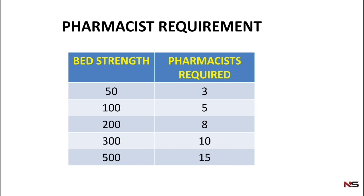If there are 100 beds in a hospital, a minimum of 5 pharmacists are required. For a 200-bedded hospital, there should be a minimum of 8 pharmacists. For a 300-bedded hospital, a minimum of 10 pharmacists are required.